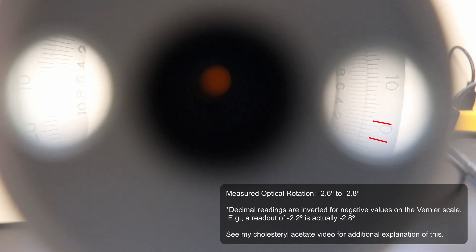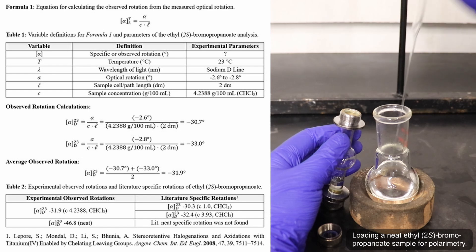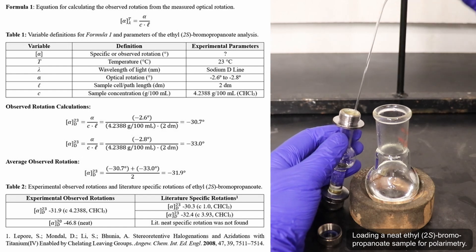And in this case, it came out to be negative 2.6 to negative 2.8 degrees, which results in a calculated observed rotation of negative 30.7 to negative 33 degrees.